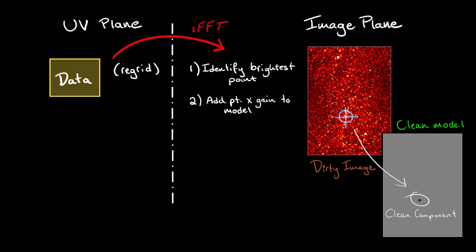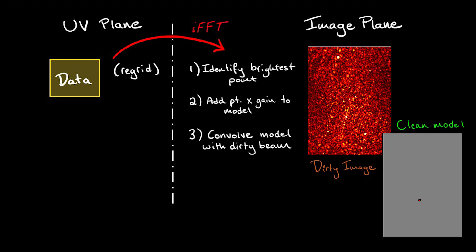The next step is to convolve this component with our dirty beam and subtract it from the image. When we image our data, we have to grid the incompletely sampled UV data. This means that any image we make is not perfectly accurate to the data.